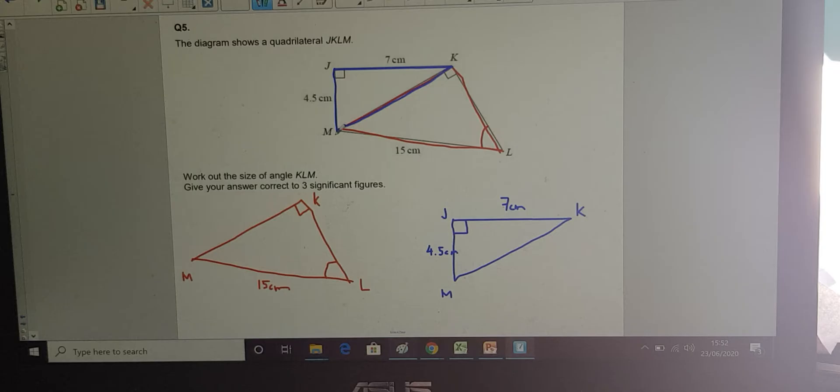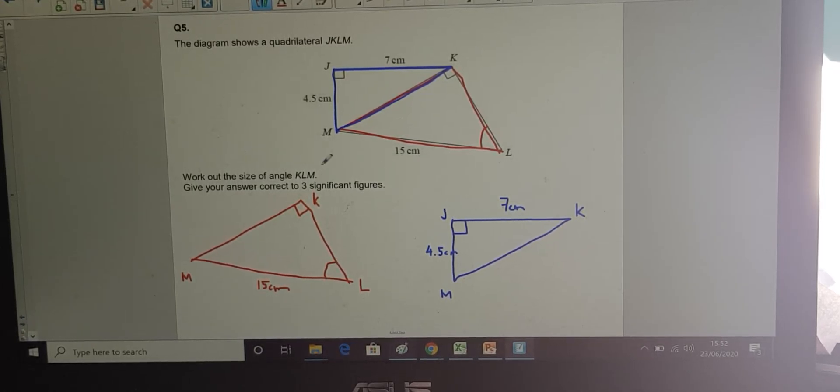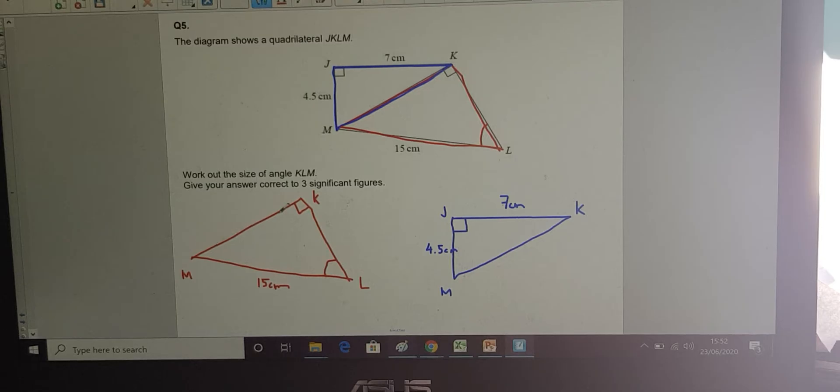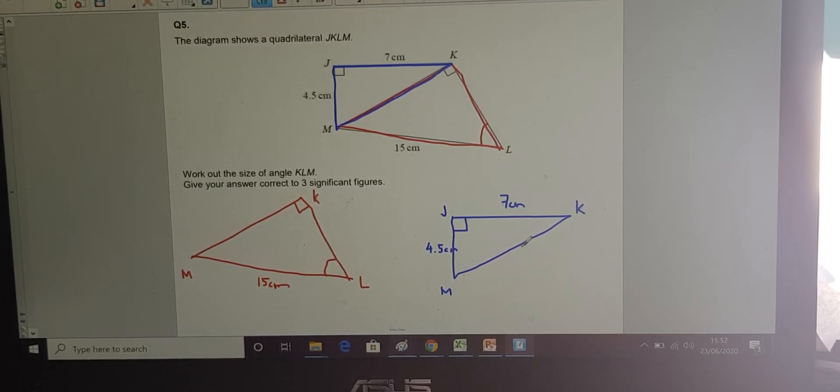Now, these things are connected, aren't they? So the length here, M, K, is the same as the length M, K, here to here, on my red triangle. So, if I work out this length, it gives me my missing length from the red triangle. Well, how am I going to do that?